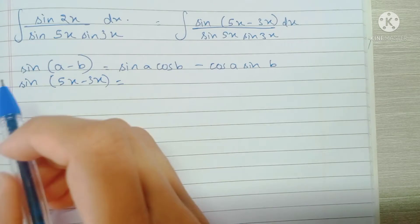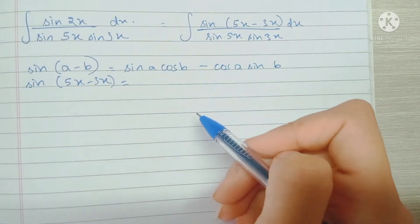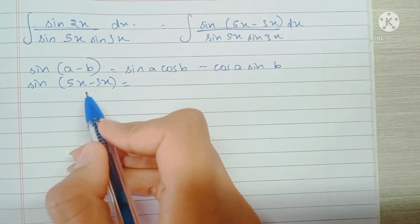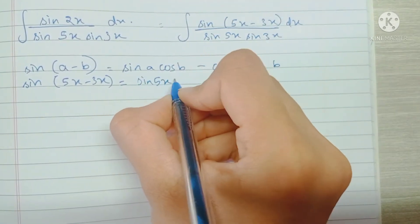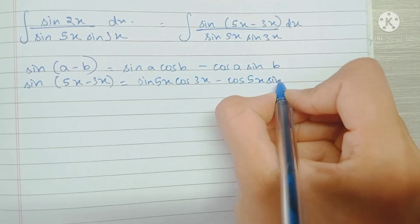So now we use the formula sine(a - b) equals sine a cos b minus cos a sine b, and then we replace the numerator sine 5x minus 3x with sine 5x cos 3x minus cos 5x sine 3x.